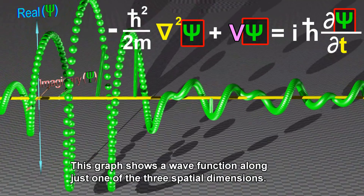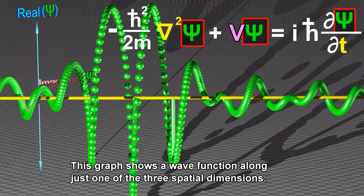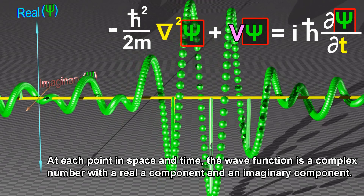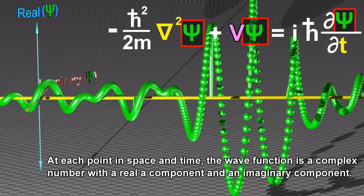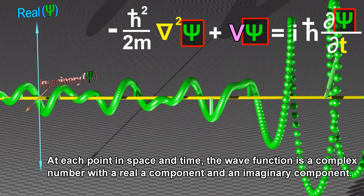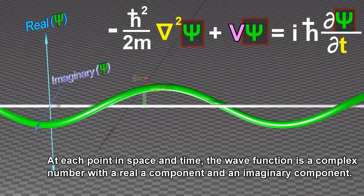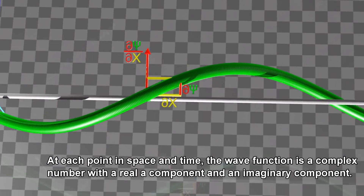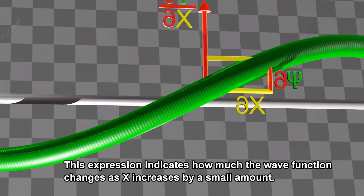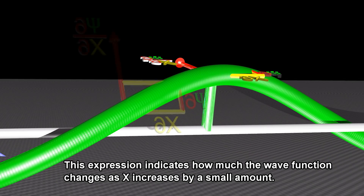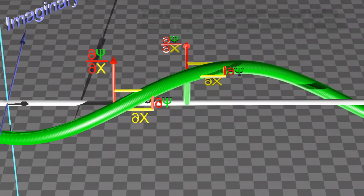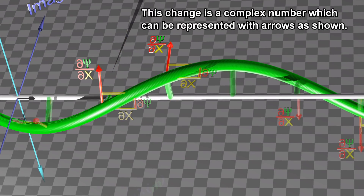This graph shows a wave function along just one of the three spatial dimensions. At each point in space and time, the wave function is a complex number with a real component and an imaginary component. This expression indicates how much the wave function changes as X increases by a small amount. This change is a complex number which can be represented with arrows as shown.